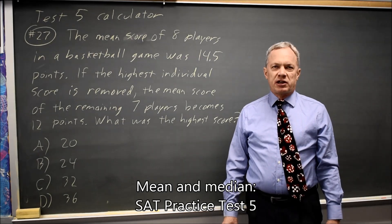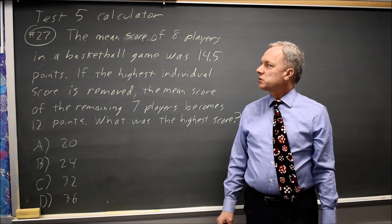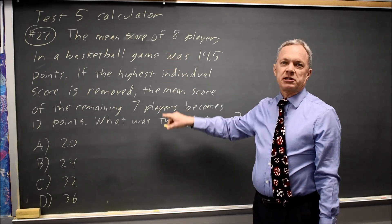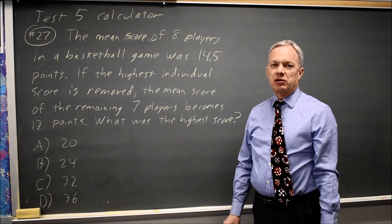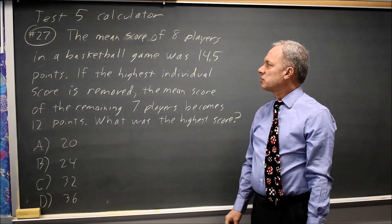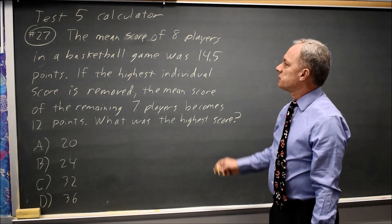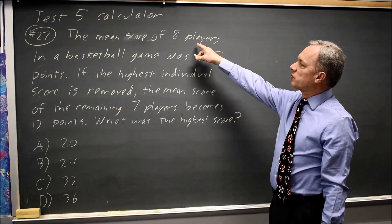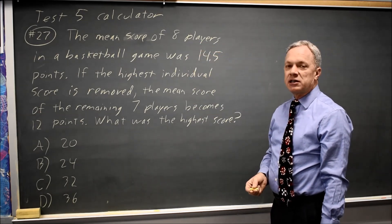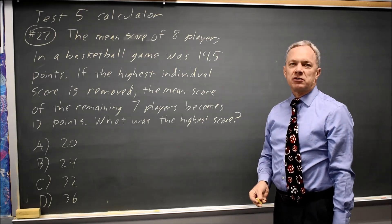This is SAT Test 5, Calculator Section, Question 27. College Board is asking you to do some computations with the mean. They almost always ask you a question involving the mean or median or both of a set of scores. In this case, the mean for eight scores is 14.5. If the highest score is removed, the mean of the remaining seven is 12.